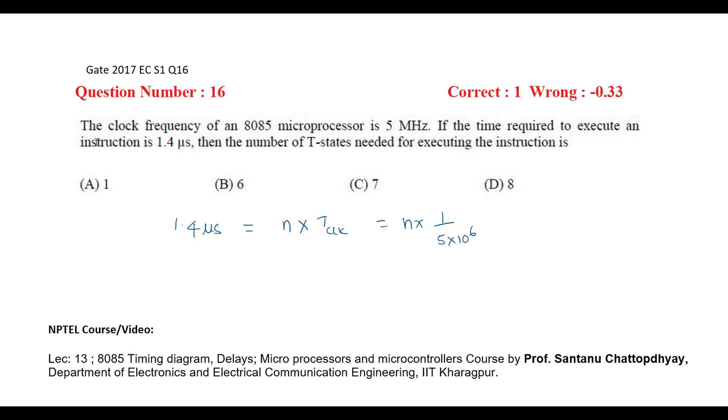So when you simplify this equation, then n equals to 1.4 into 5, and 10 power minus 6 into 10 power 6. So this equals to 7. So the right option is the number of T states required is 7. So option C is the right option.